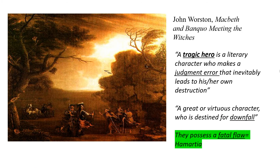A tragic hero is a literary character who makes a judgment error that inevitably leads to his own destruction. You need to write down in your exams the concept of hamartia — the fatal flaw. This is what we call the Achilles heel: the one fatal flaw each character has that leads them to their downfall. For example, if I have the fatal flaw of anger — whenever something happens I get angry — that wrath, that anger, one of the seven deadly sins, leads me to my downfall. This is the fatal flaw of the tragic hero that Shakespeare creates in the character of Macbeth.